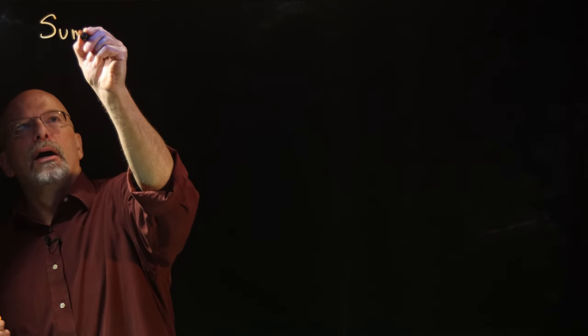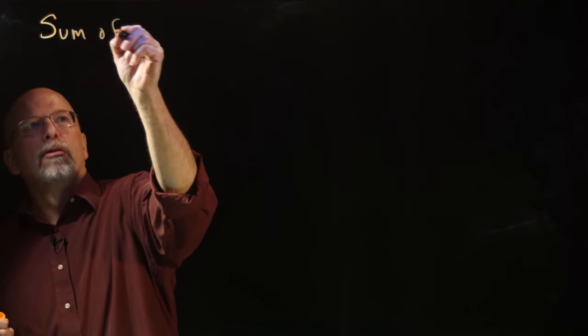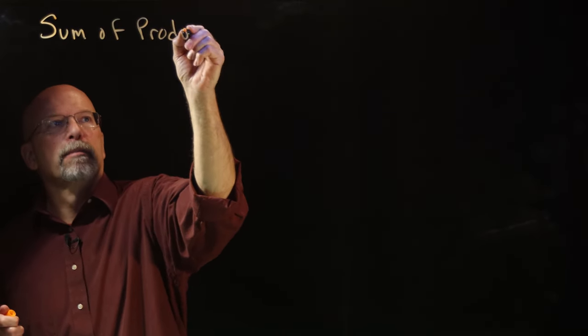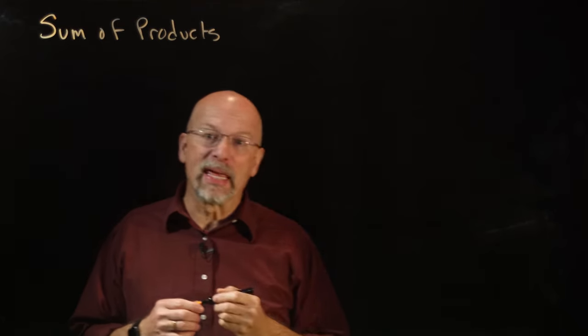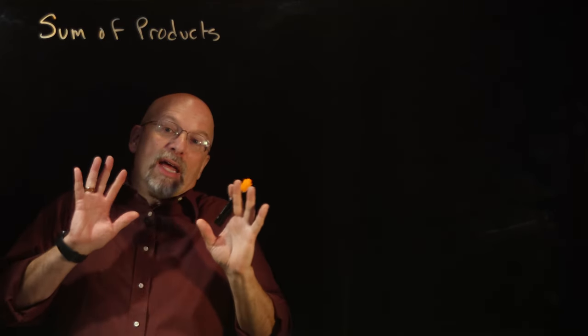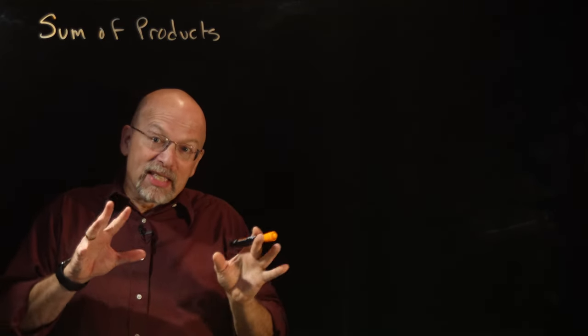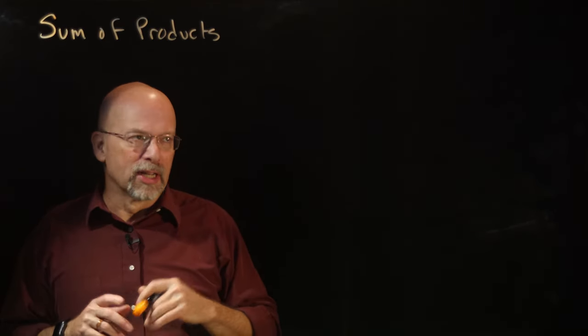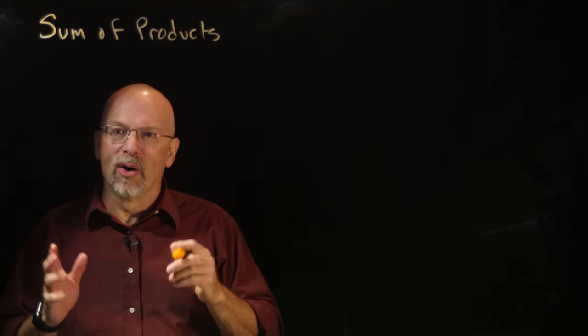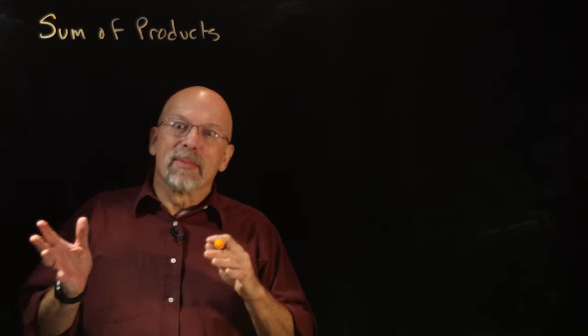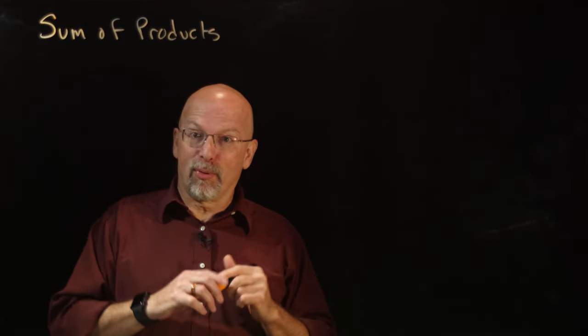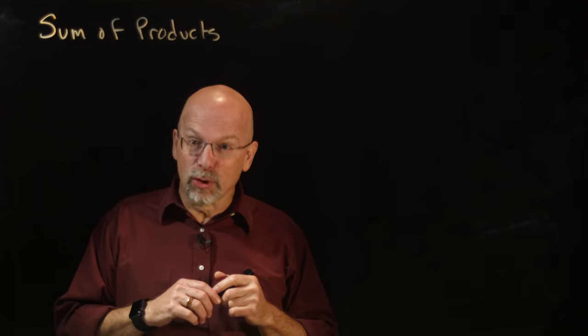In the last lesson, we saw that any truth table can be taken to an expression called a sum of products expression — the SOP expression. Now, what we are going to show in this lesson is how an expression can be quickly made into a sum of products truth table.